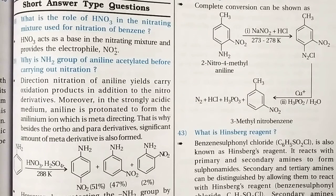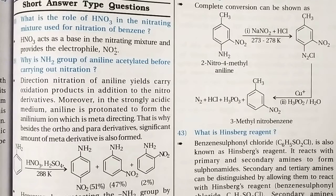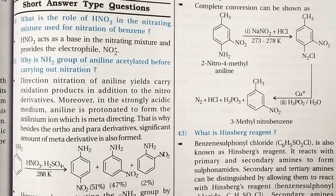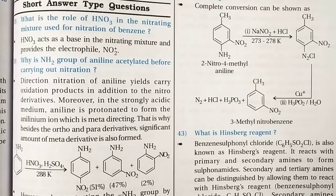If we wish to stop the reaction at the mono-substitution stage, the activating effect of the NH2 group is reduced by acetylation. The acetyl group, being electron-withdrawing, attracts the lone pair of electrons of the nitrogen atom. As a result, the lone pair is not exclusively available for donation to the benzene ring, hence the activating effect of NH2 is reduced. This is known as protection of the amino group by acetylation.